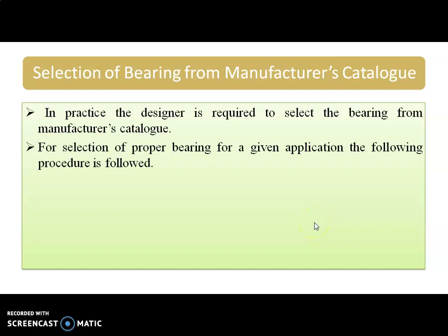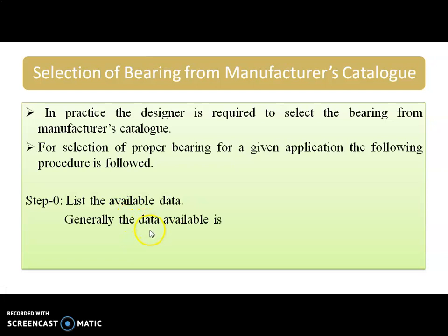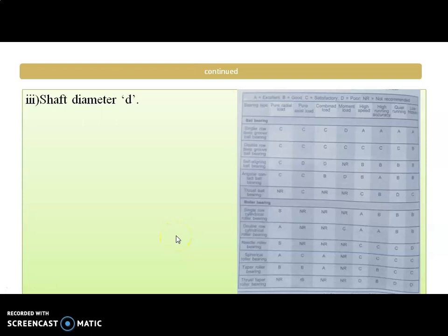Initially we should have some parameters before selecting the bearing. Step 0 is to list out the data which is available. The data available is power transmission, speed of the shaft, shaft diameter, and the application on which the type of loading depends. These are the parameters we need to have before selecting the bearing.